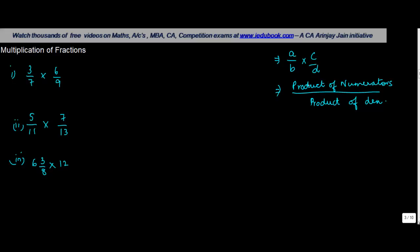So let us first see the simple ones. 3 upon 7 into 6 upon 9. So first what is the top thing? Product of the numerators. So the numerator is 3 into 6 divided by product of the denominator 7 into 9. So what do we get here? We get 3 into 6 is equal to 18 and we get 7 into 9 is equal to 63.